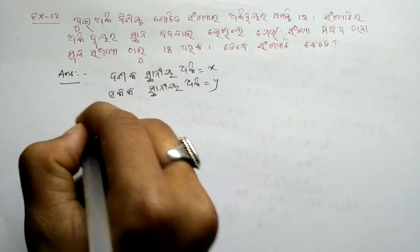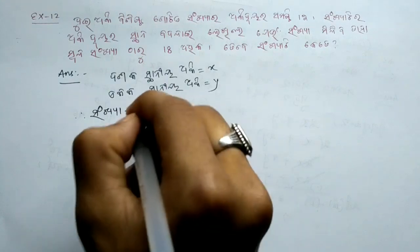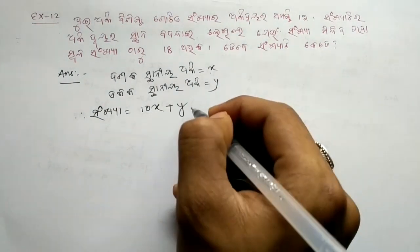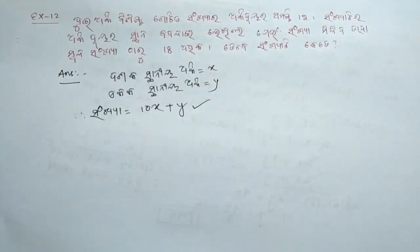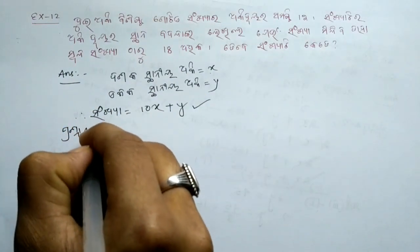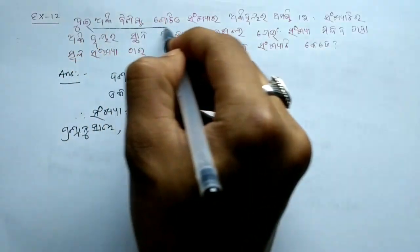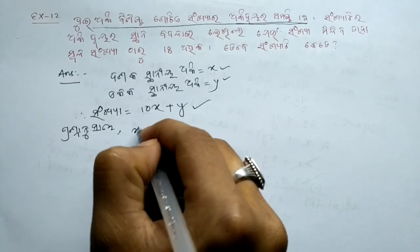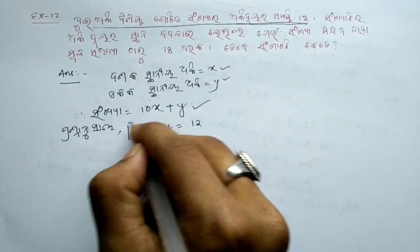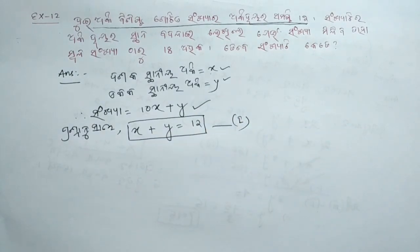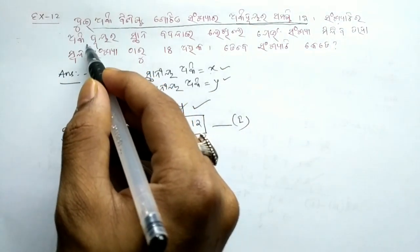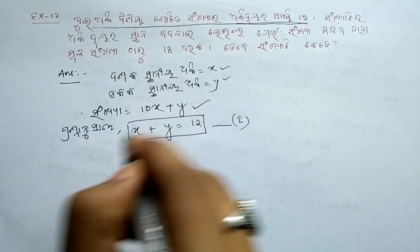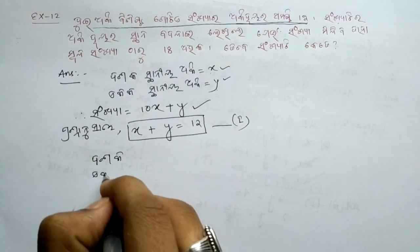We have a two-digit number. Let the digit in the tens place be x and the digit in the units place be y. So the original number is 10x plus y. The sum of the digits is 12, so x plus y equals 12.